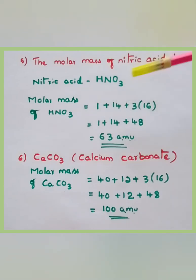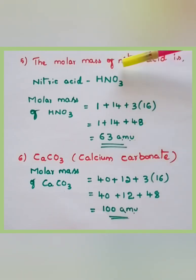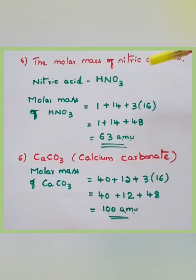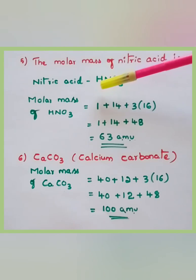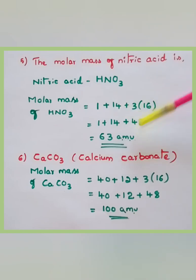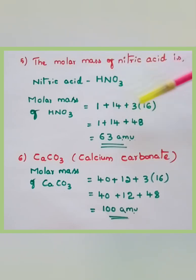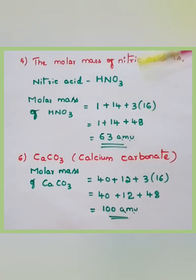Next: the molar mass of nitric acid. Recall the formula: HNO₃. These trickier questions appear in biological science papers; for maths and physics students, atomic weights may be given directly. Molar mass of HNO₃ = 1 (H) + 14 (N) + 3×16 (O) = 1 + 14 + 48 = 63 amu. Be careful not to write 4 oxygens by mistake — it is 3 oxygens.